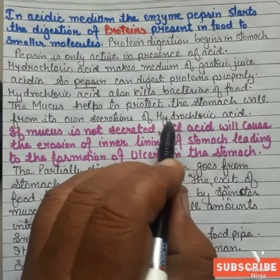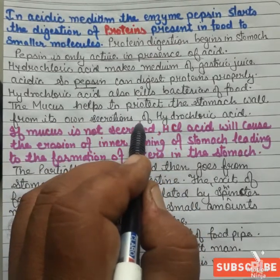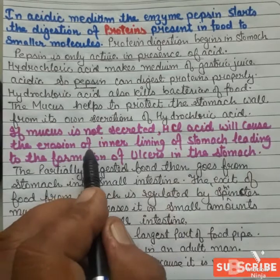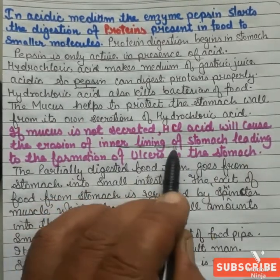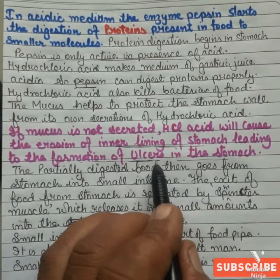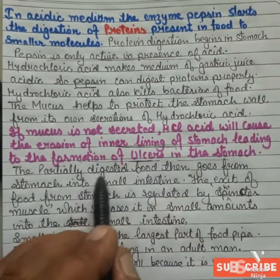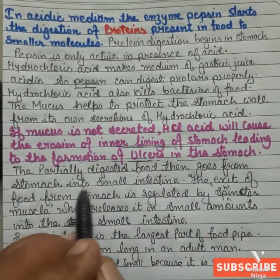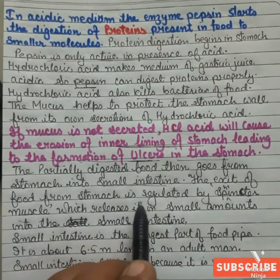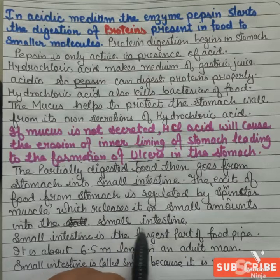Mucus helps to protect the stomach walls from its own secretion of hydrochloric acid. The walls of the stomach are protected by this mucus. If mucus is not secreted, the acid will cause erosion of the inner lining of the stomach, leading to the formation of ulcers. The partially digested food passes from the stomach into the small intestine, regulated by the sphincter muscle, which releases it in small amounts.